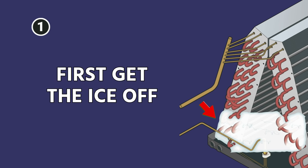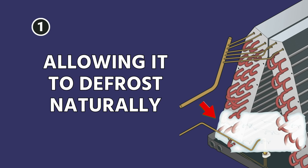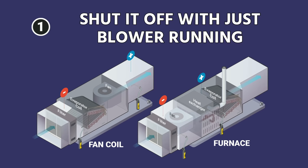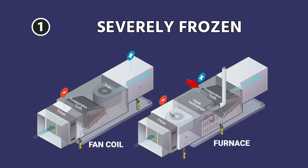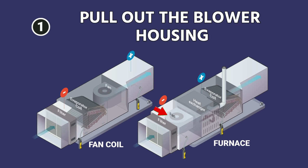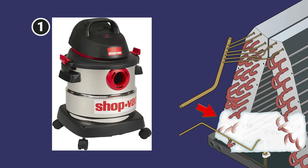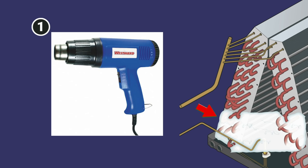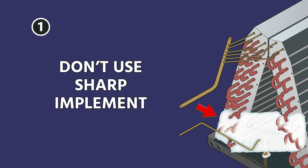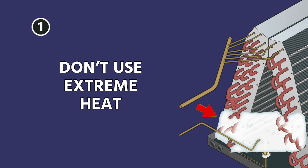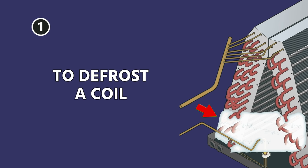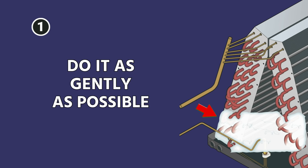First, get the ice off. In most cases, this is just going to mean allowing the thing to defrost naturally — shut it off with just the blower running in the case of a fan coil with the blower over the coil. If it is a gas furnace and you have a severely frozen evaporator coil, then you're going to want to pull out the blower housing and try to manage that ice as much as possible. As it melts, use a shop vac. In some cases you can use a heat gun or something of that nature. Don't use any sort of sharp implement or any extreme heat to try to defrost a coil.